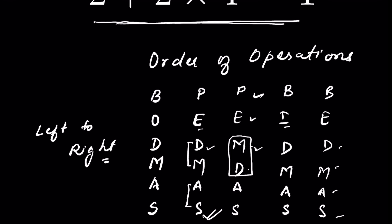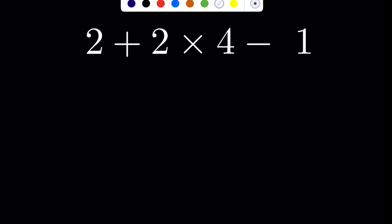E stands for Exponent, I for Indices, then Division, Multiplication, Addition, Subtraction. Whenever you get a question where these operations are present, you solve them according to this set of rules: first solve the bracket, then Order/Exponent/Indices, then Division and Multiplication whichever comes first from left to right, then Addition and Subtraction whichever comes first from left to right. Now let's solve this question.